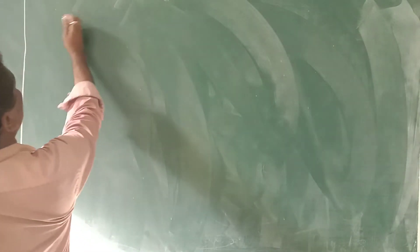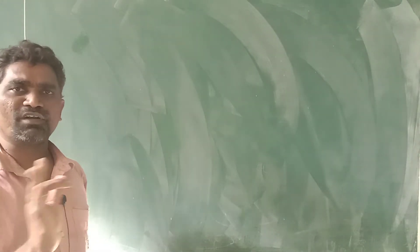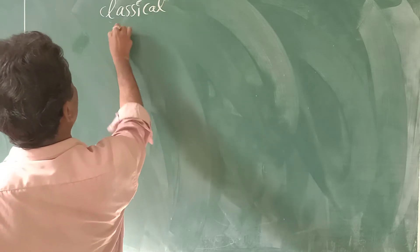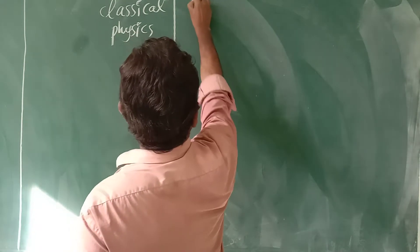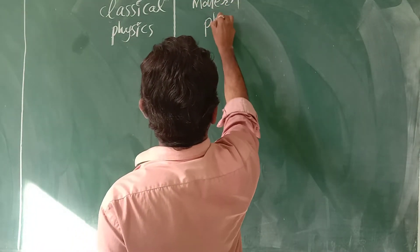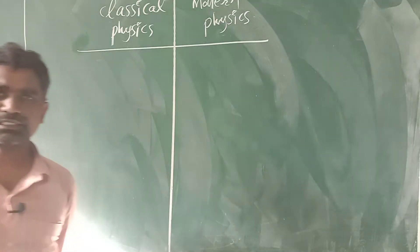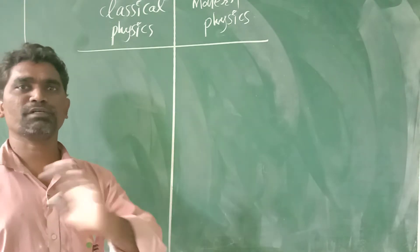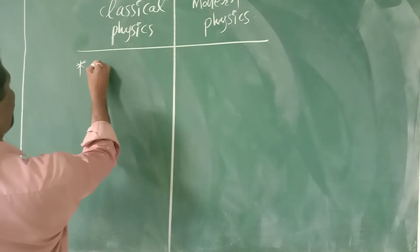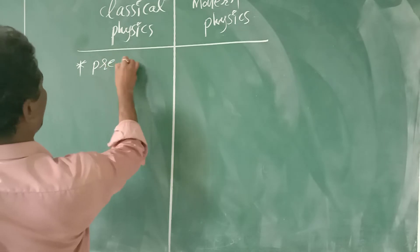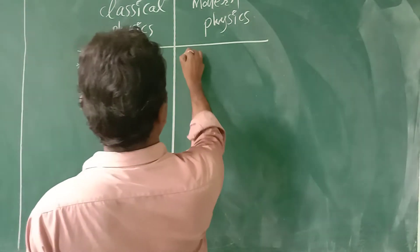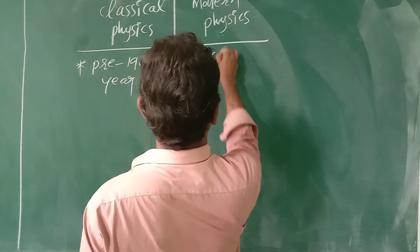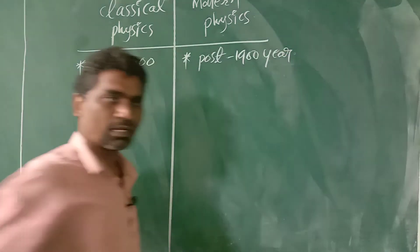Students, now we discuss the difference between classical physics and modern physics. Classical physics is physics which was invented before 1900 — pre-1900 physics. Modern physics is physics which was invented after 1900 — post-1900 year.